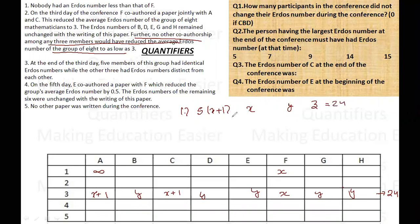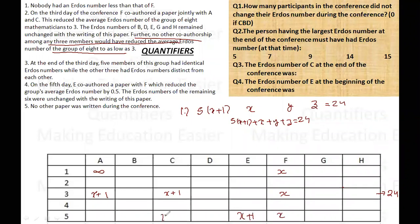Their total is 24, so 5(x+1) + x + y + z = 44. On the fifth day, E co-authored a paper with F, which reduced the group's average by 0.5 — so the average went from 3 to 2.5. Since E's Erdős number changed, it was not x plus one before, so E must have been y or z. Now six people have x plus one.